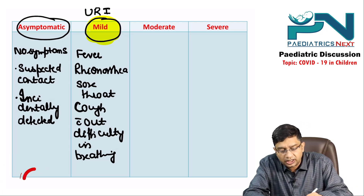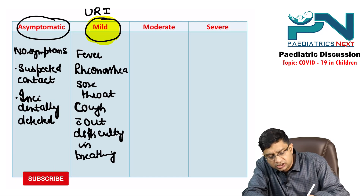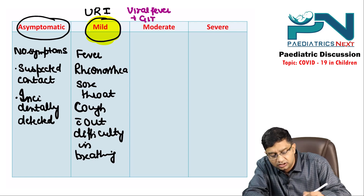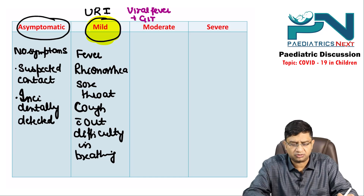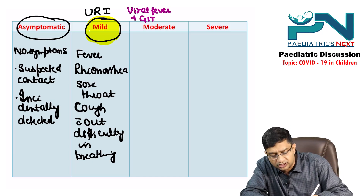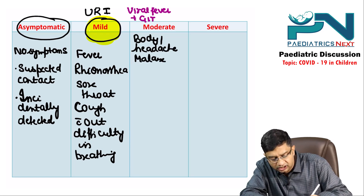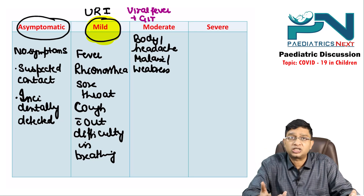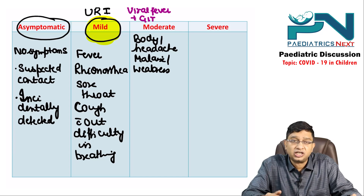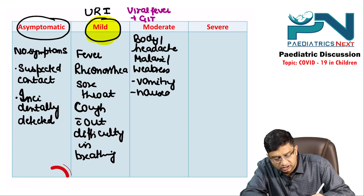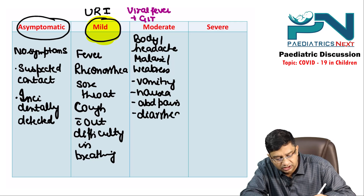In the moderate case, remember it as symptoms of viral fever plus GIT symptoms. For viral fever there can be pneumonia, chills, body ache, headache, malaise, and weakness. For GIT there can be vomiting, nausea, abdominal pain, and diarrhea.